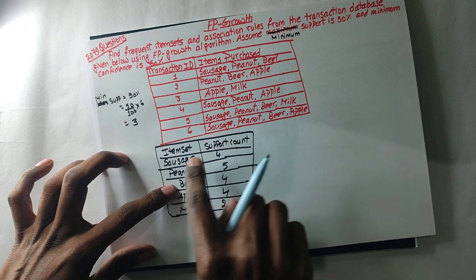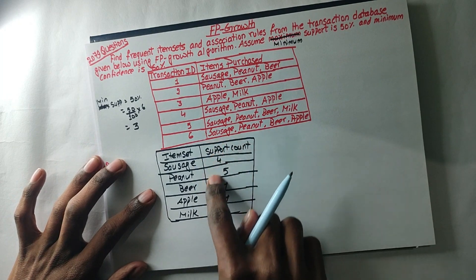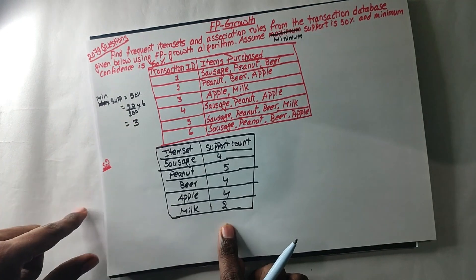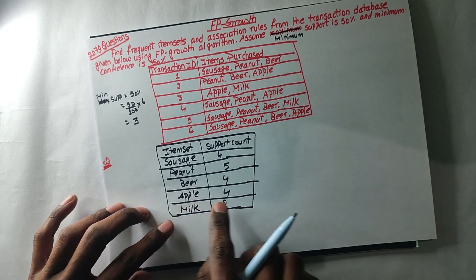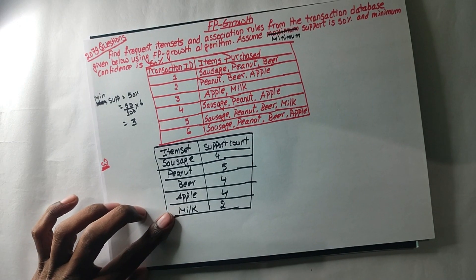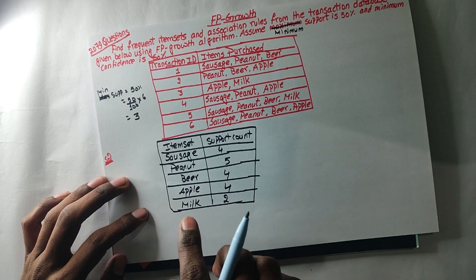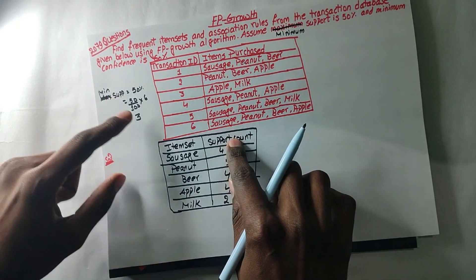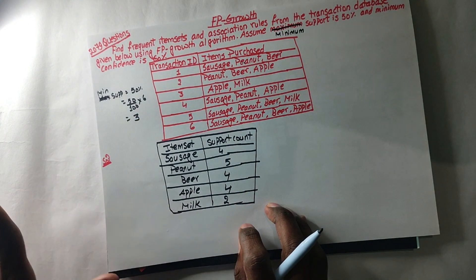This is the minimum support count. So you can compare the minimum support. Three pieces — reject the milk. You can compare the support count value with the minimum support. Compare 3 different items, reject and eliminate such items.